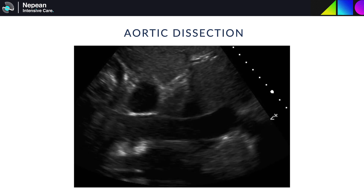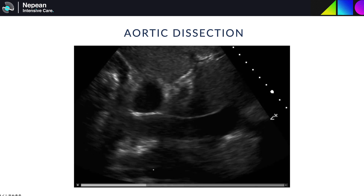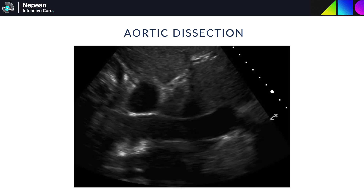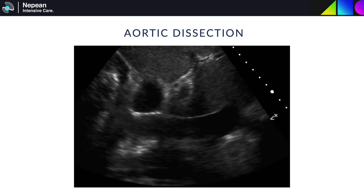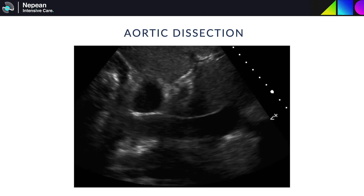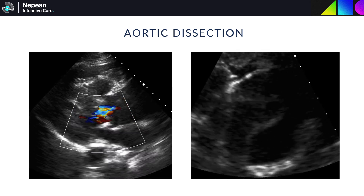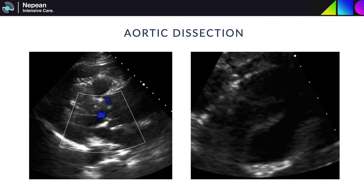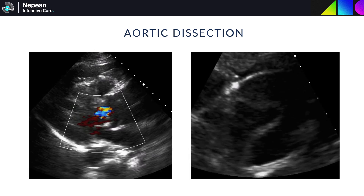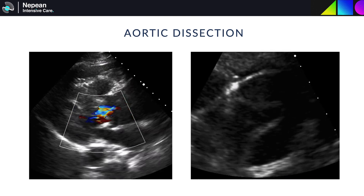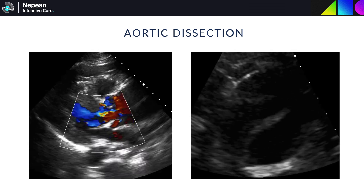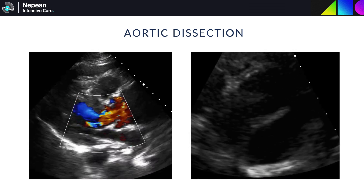Occasionally, ultrasound may reveal an intimal flap that can be seen in the aorta. Ultrasound has quite poor sensitivity for this — CT is the imaging method of choice — but just be aware that you may get incidental findings. Remember that if you see a dissection, perform an urgent echo to see if there are any complications associated with a type A dissection. As seen here, there is a type A dissection with a dissection flap in the ascending aorta with associated aortic regurgitation and pericardial effusion.